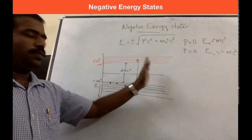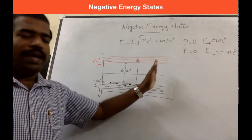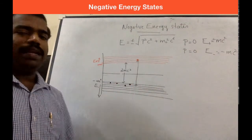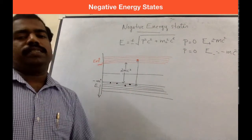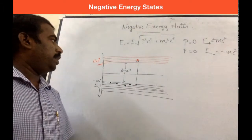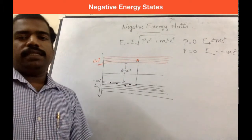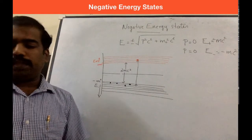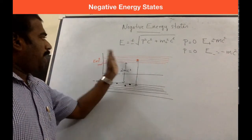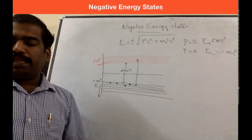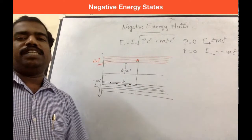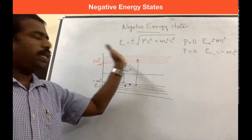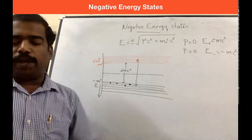We cannot expect any occupied energy states between mc squared and minus mc squared — this is the forbidden energy gap. The positive branch of energy is similar to classical relativistic energy, and we call these the positive energy values.